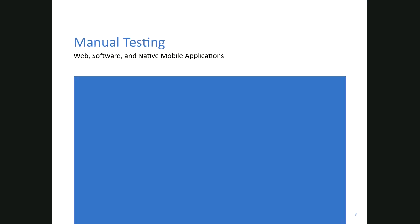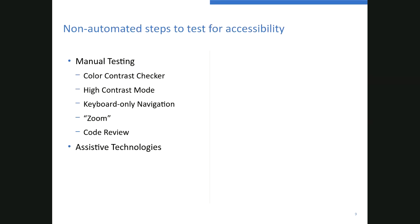Manual testing — and I'm covering software, web, and native apps here. Non-automated steps to test for accessibility are things like color contrast, high contrast, keyboard only, zoom, and code review. And then we have assistive technologies.